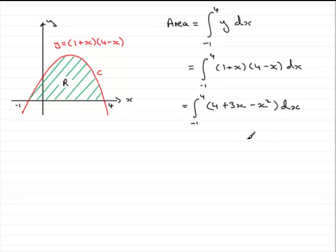Now, each term is ready to be integrated. All we need to do is, just for the constant, just add an x on the end, so we get 4x. And then, for each of these two terms, we just add 1 to the power and divide by the new power. So we're going to get plus 3x squared over 2, divide by the new power, 2.